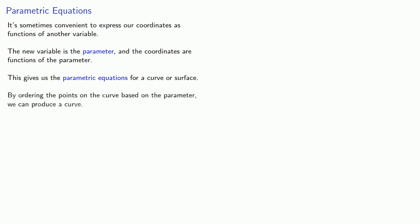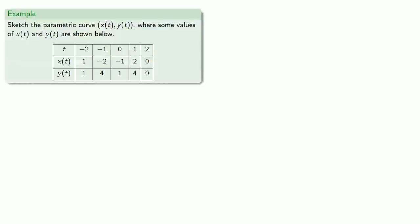By ordering the points on the curve based on the parameter, we can produce a curve. For example, let's sketch the parametric curve x(t), y(t), where some values of x(t) and y(t) are shown.